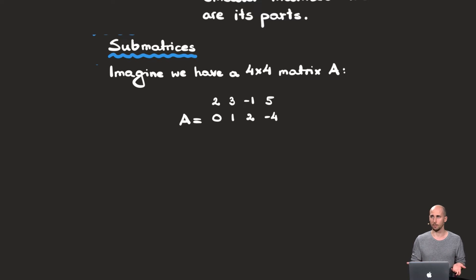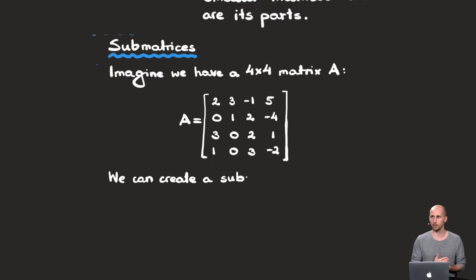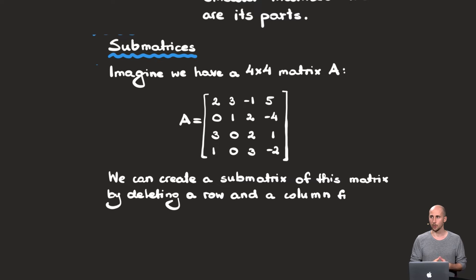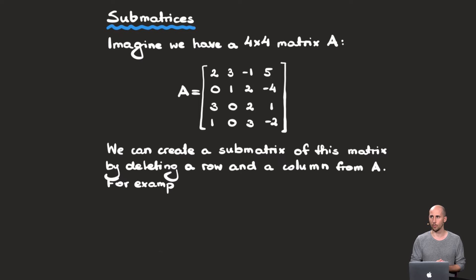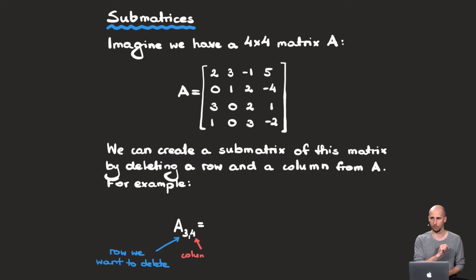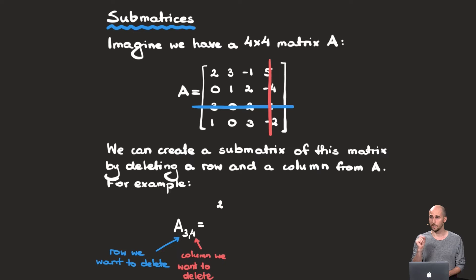Let's look at an example. Imagine we have a 4×4 matrix and we want to create a sub-matrix with one row and one column deleted. For example, if we want to remove row number three and column number four, we create a sub-matrix where the first index tells us which row to delete and the second index tells us which column to delete. We simply leave all the remaining elements, and that's it — sub-matrices are quite simple.